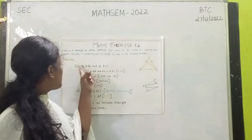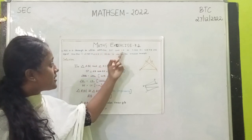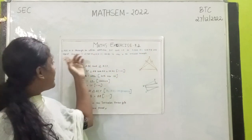Maths Exercise 7.2. ABC is a triangle in which altitudes BE and CF to sides AC and AB are equal.